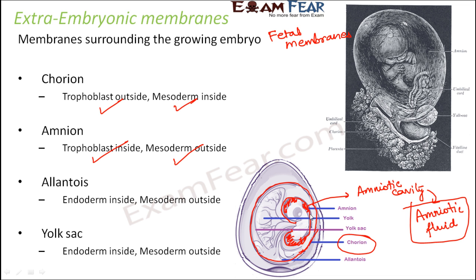Regarding the composition of amnion: it is made up of trophoblast on the inside and mesoderm on the outside. This makes sense because chorion has mesoderm on its inside, and amnion is located inside chorion — so mesoderm is on the outside of amnion, and trophoblast is on the inside.